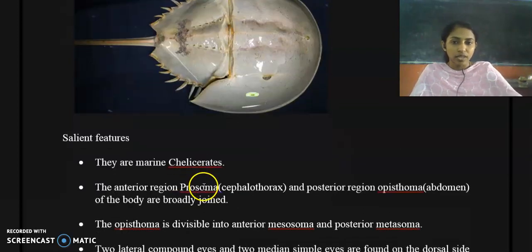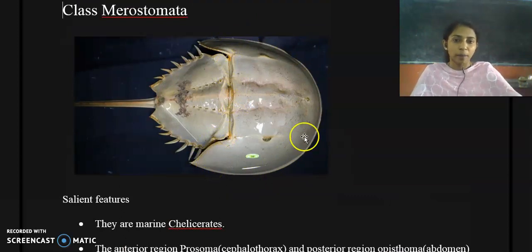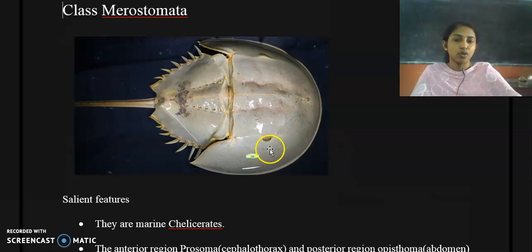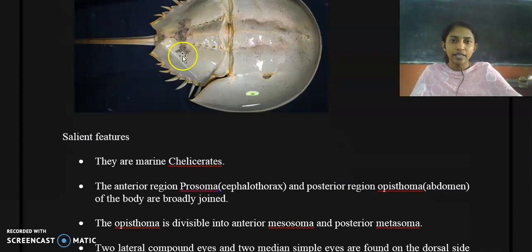They are marine chelicerates, and the anterior region is called the cephalothorax, also termed the prosoma. The posterior region is called the opisthosoma or abdomen. Their body is divided into two regions: the anterior region called prosoma or cephalothorax, and the posterior region called abdomen or opisthosoma. The opisthosoma is further divisible into anterior mesosoma and posterior metasoma.